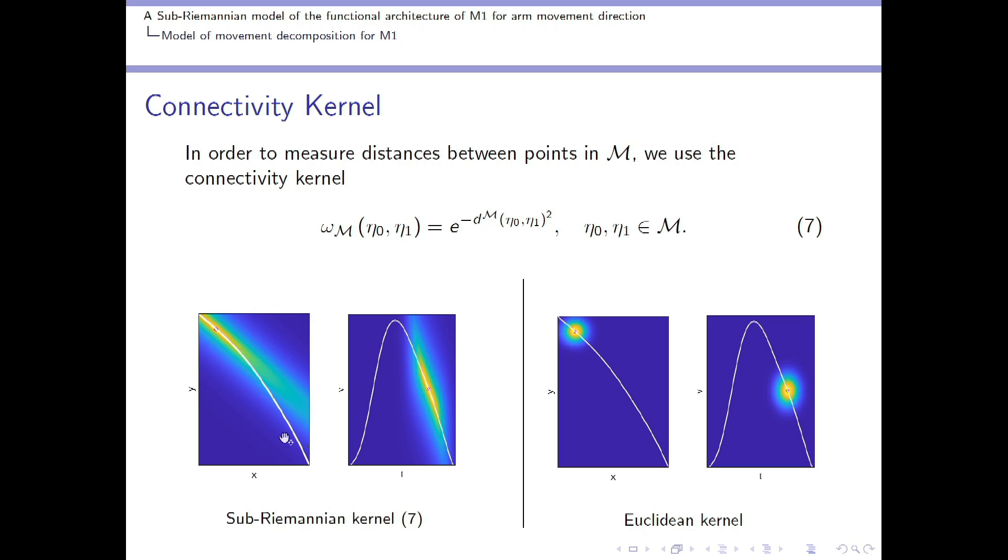Regarding how it behaves, the behavior of our kernel based on a sub-Riemannian distance, we show an example here on the left column, where we plot in white a curve over the position plane and on the right its corresponding speed profile. We fix a point and we plot over a rectangle our connectivity kernel. And as it can be observed, the sub-Riemannian kernel suitably follows the tangent of the curves because it takes into account the differential constraints operating on the variables. By contrast, we represent on the right the Euclidean one, which is a circle over the plane instead.